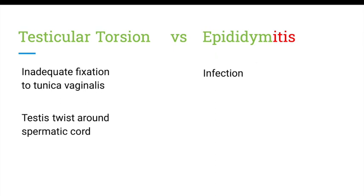Epididymitis is caused by infection or inflammation — remember the '-itis' in its name denotes infection or inflammation. For patients under 35, it is usually due to an STI such as gonorrhea or chlamydia. However, if they are over the age of 35, it is most commonly due to E. coli.